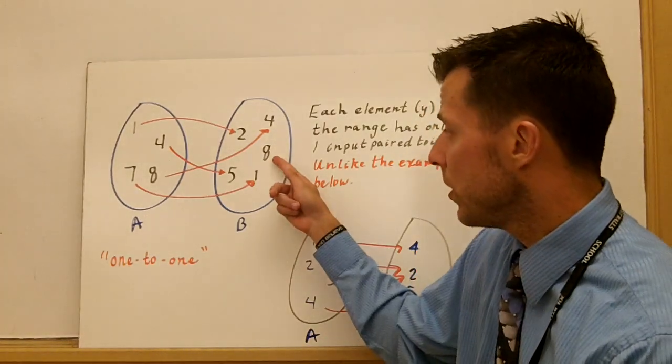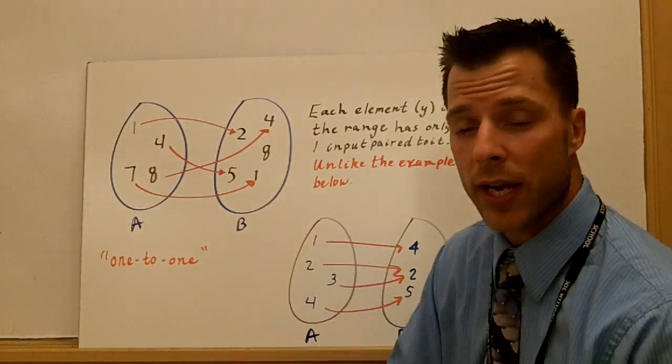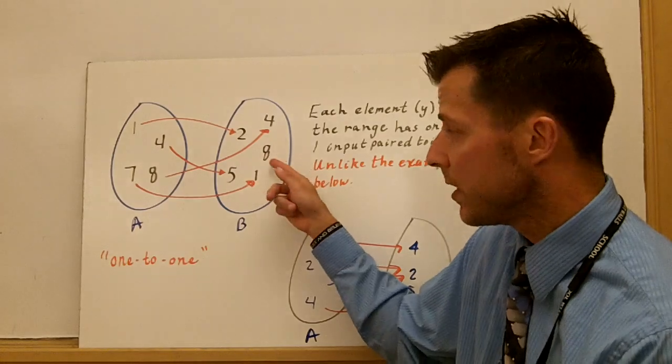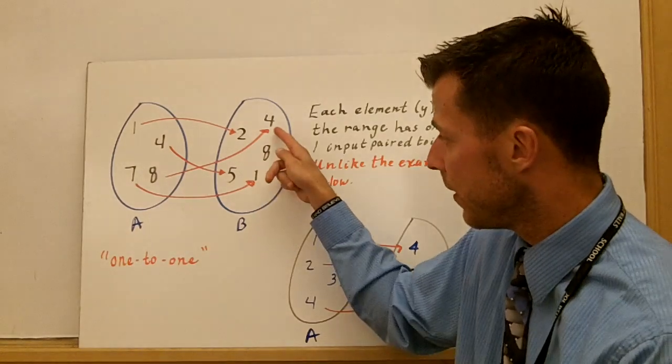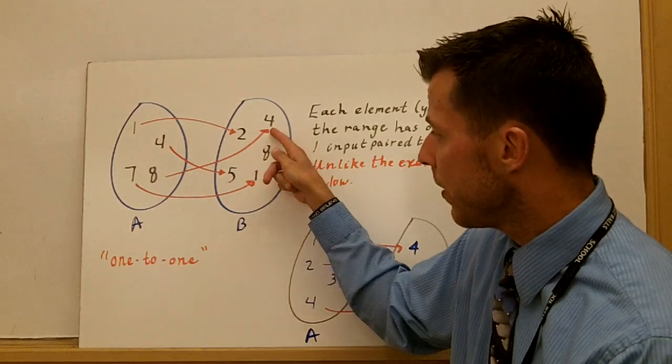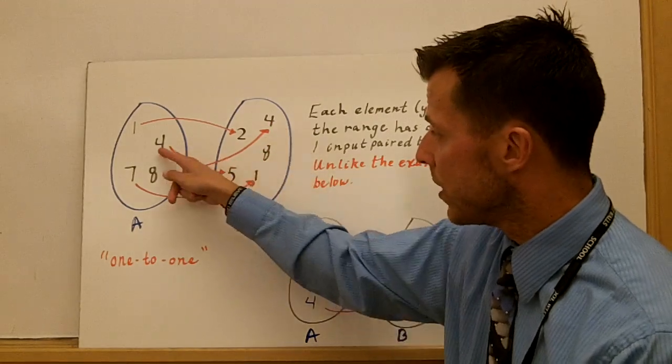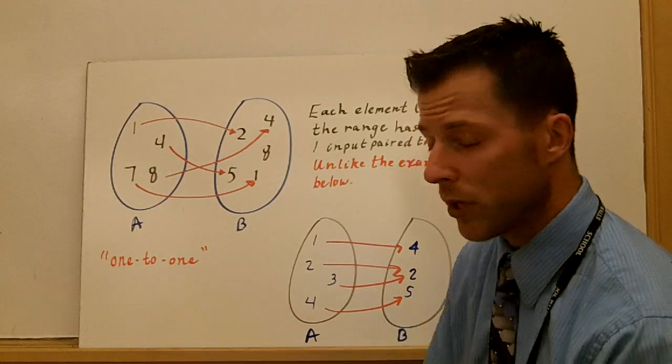And this eight is not in the range. That's okay. It can just be floating there. It doesn't matter. It does affect if it's an onto function, but every value that's in our range is paired with one x value, and we say that's one-to-one.